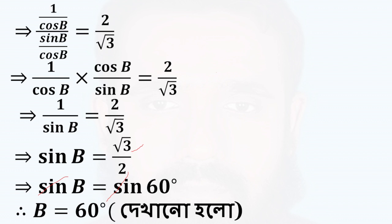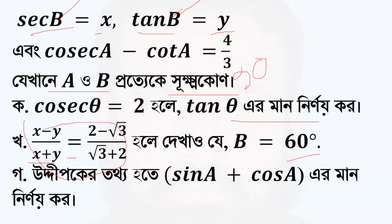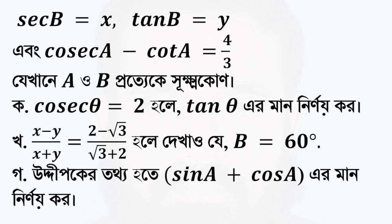This is the case of sin a plus cos a. The case of sin a, the case of sin a plus cos a. The case of cos c is sin a plus cos a, equal to 4 by 3.